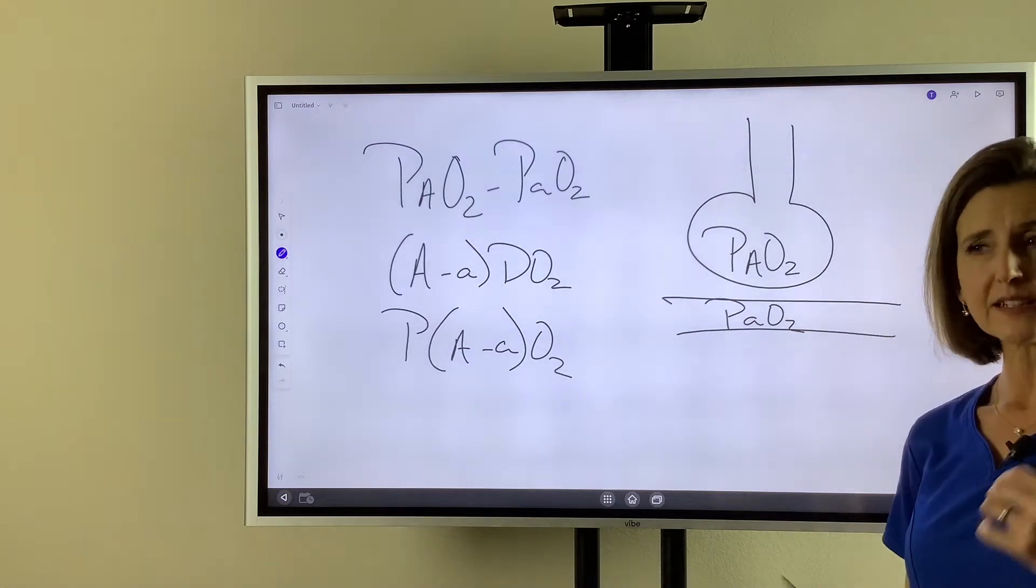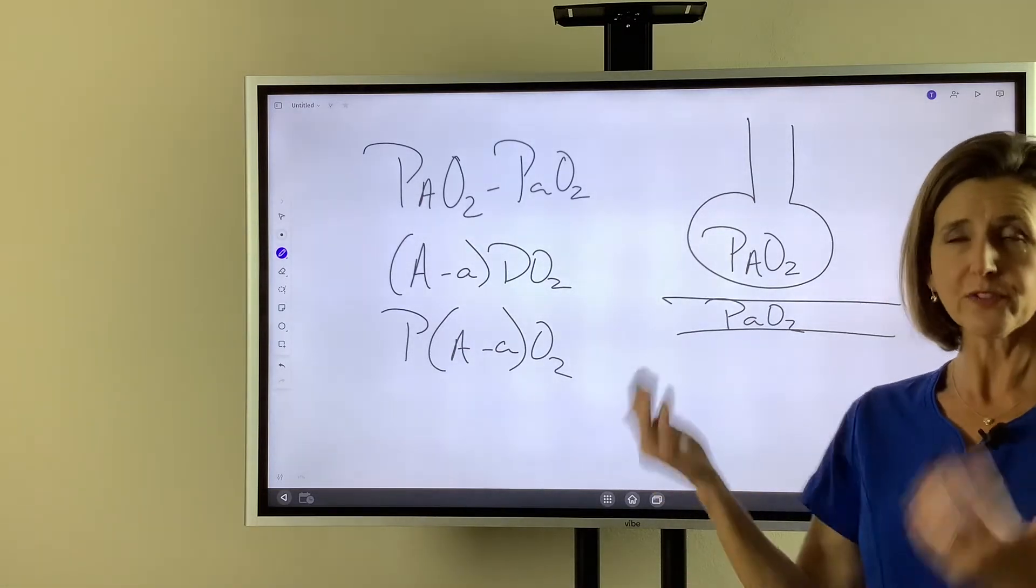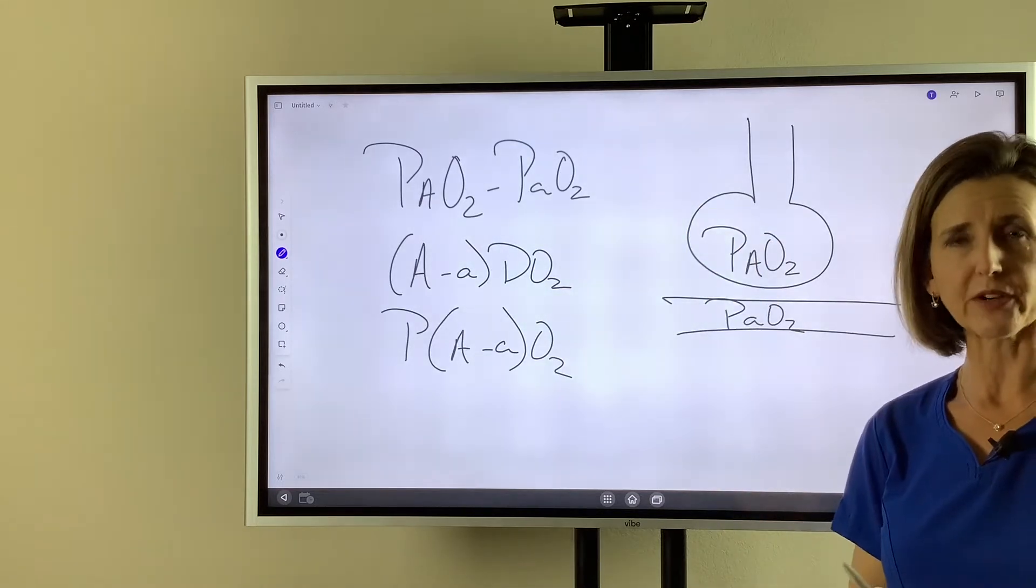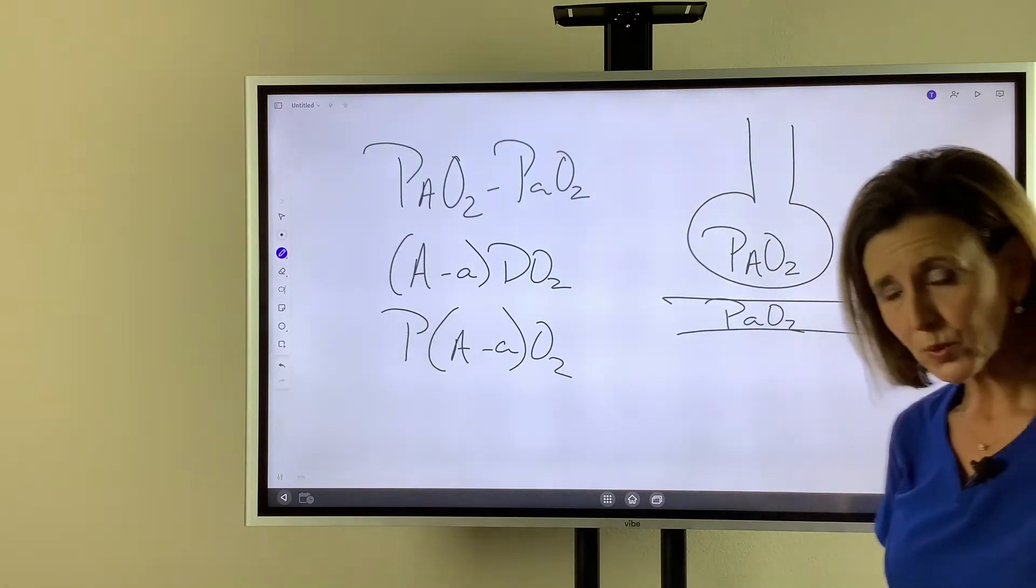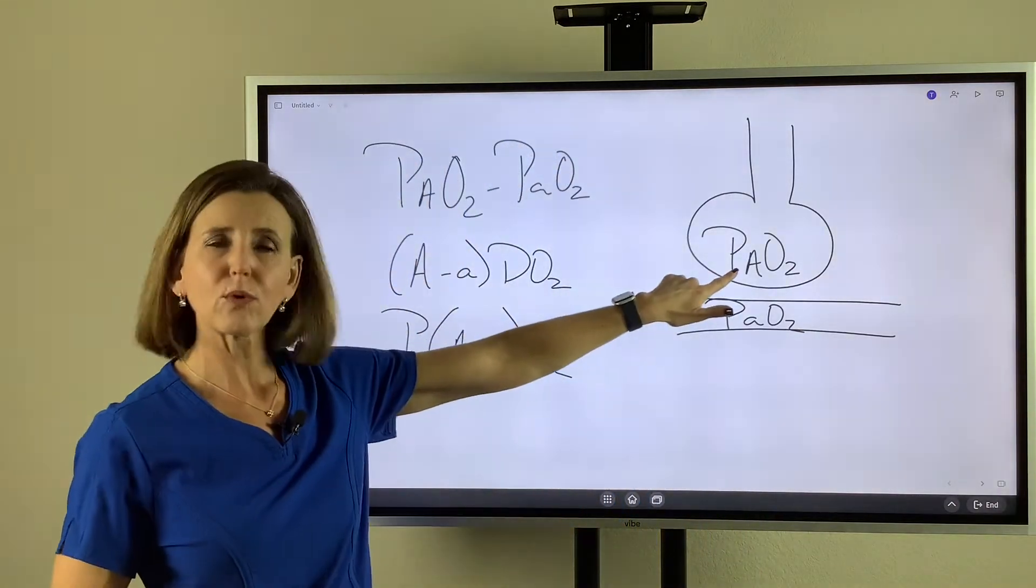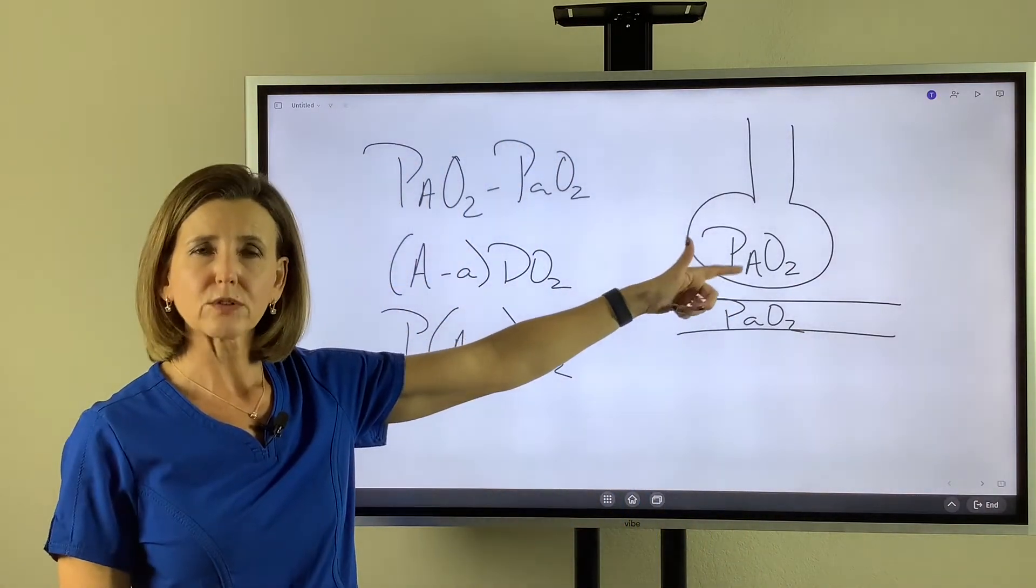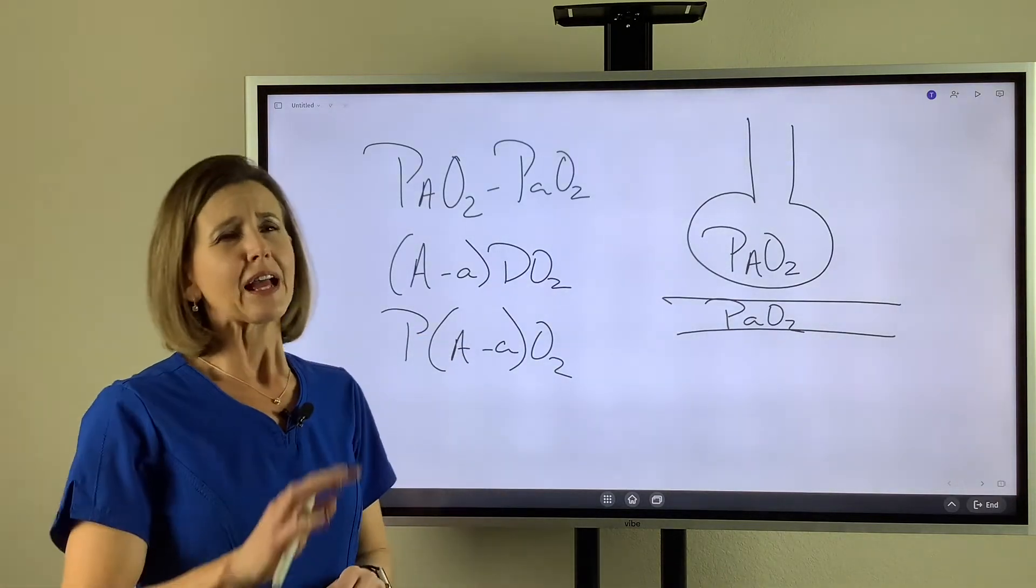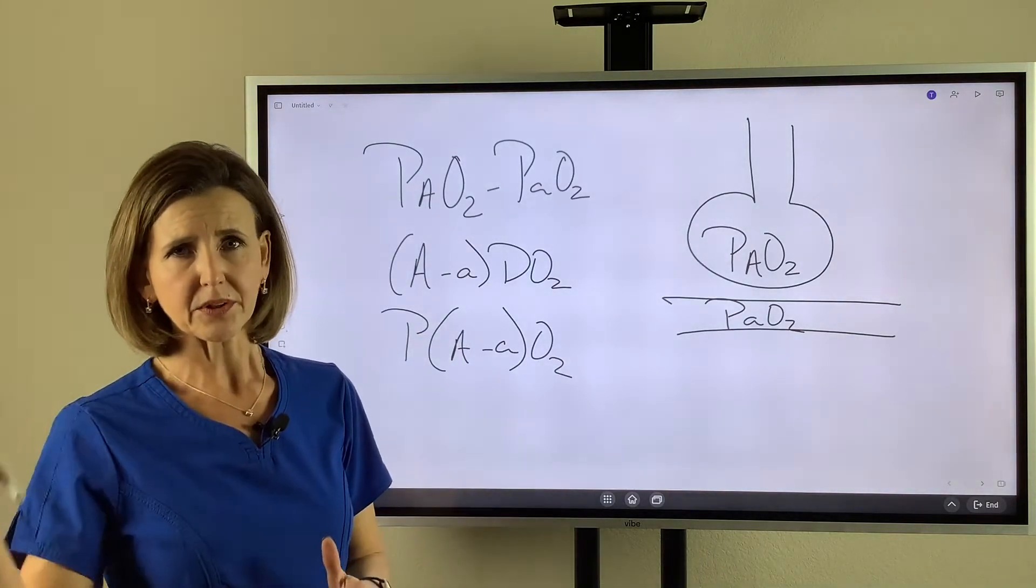This tells us how efficiently oxygen is moving from the alveoli into the pulmonary capillary bed. In school, we spend a lot of time on the mathematical formula for the PAO2. I think we spend so much time on the math that sometimes we don't spend enough time on the concept.